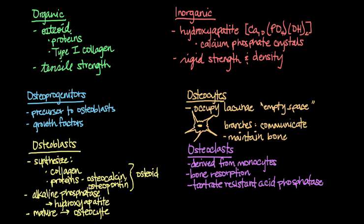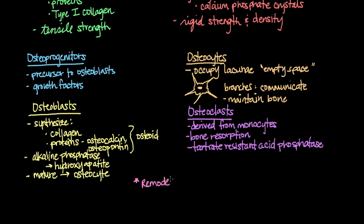So osteoblasts help build up bone with alkaline phosphatase, and osteoclasts break that bone back down again with tartrate-resistant acid phosphatase. Bone is constantly being remodeled, built up by osteoblasts and broken down by osteoclasts.